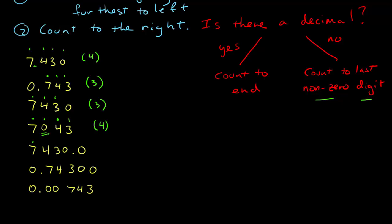The next one, I go all the way to the non-zero to the left, which is here. Count to the end: 1, 2, 3, 4, 5. I count all the way to the end because there is a decimal point. So this has 5.